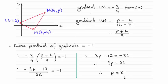How I went about this is that we know that LM and MN are perpendicular so I use the perpendicular gradients rule, that is that the gradient of LM when multiplied by the gradient of MN should equal minus 1.